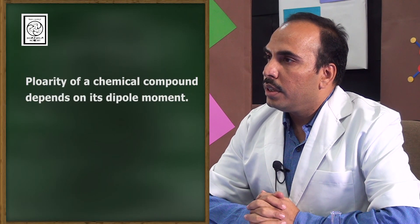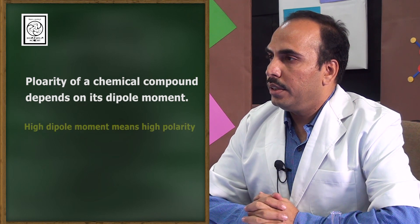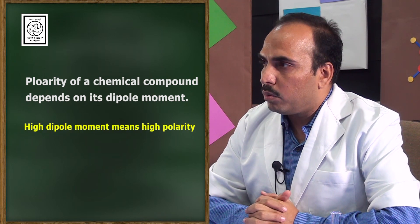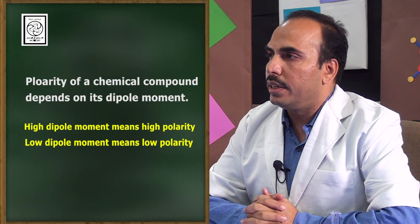Our today's experiment is based on thin layer chromatography, commonly called TLC. It is a method used when there are two or more components present in a mixture and we have to separate them. They are generally separated based on their properties called polarity and adsorption. Polarity of a chemical compound depends on the dipole moment. If a compound has a high dipole moment, it has high polarity; if it has a low dipole moment, it has low polarity.